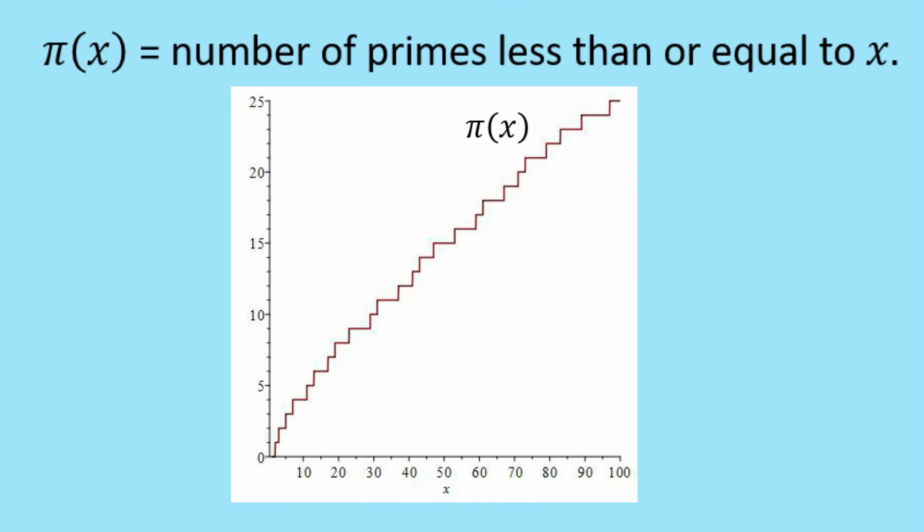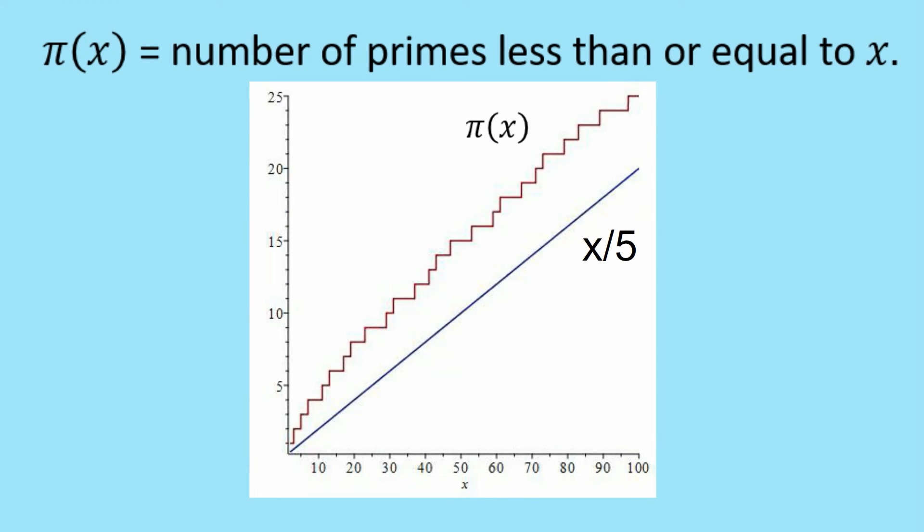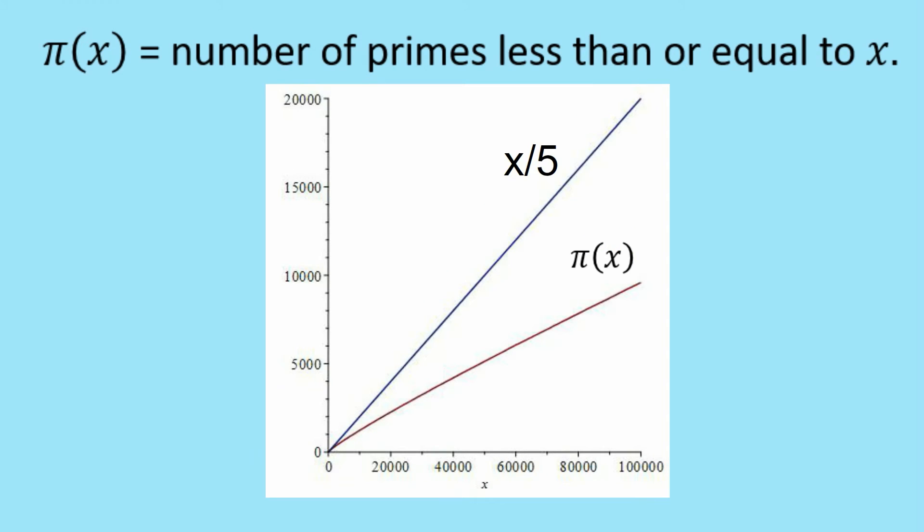Imagine it's a couple of hundred years ago. So you don't have a calculator or a computer. And you're trying to work out a function that approximates π(x). So you might start out with x on 5. And here's what it looks like if you graph it out to x equals 100. And now, that's pretty good, but now with computers we can see if we go out to 100,000, it doesn't work very well at all.